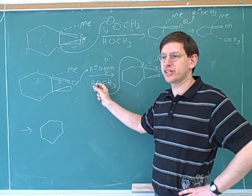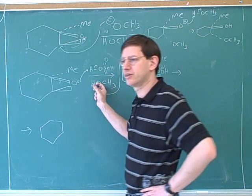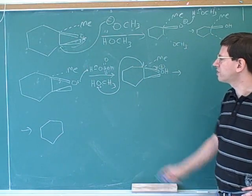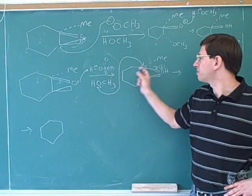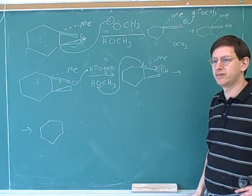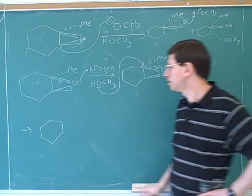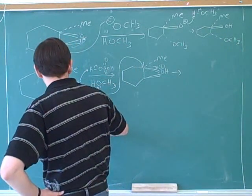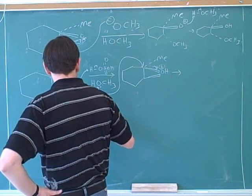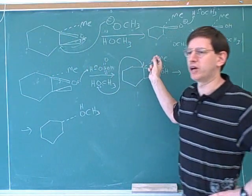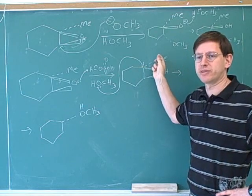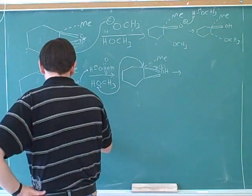So is the nucleophile going to end up on a wedge or a dash? Will the nucleophile end up on a wedge or a dash when it attacks this carbon, if it's attacking from behind? The methyl group must get pushed forward to a wedge. The methyl group here is getting pushed forward to a wedge.